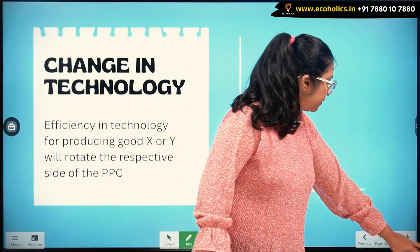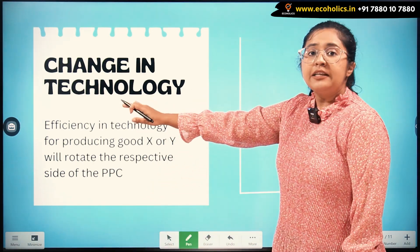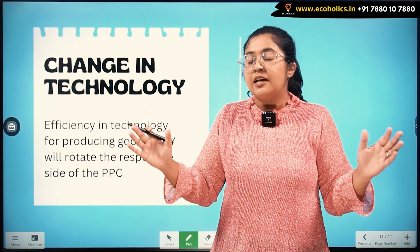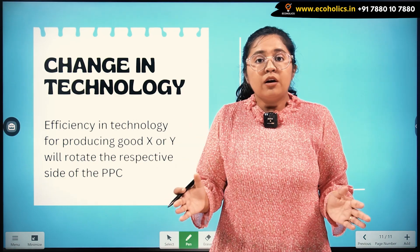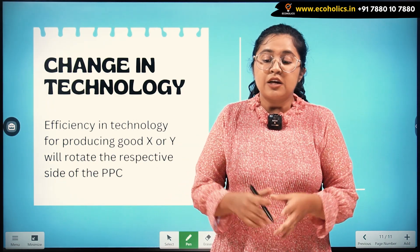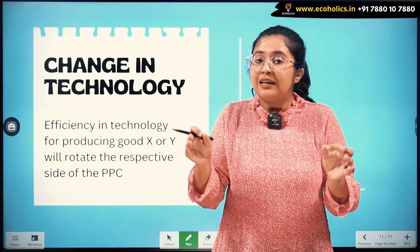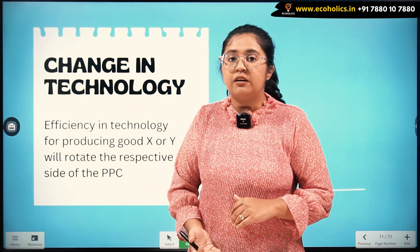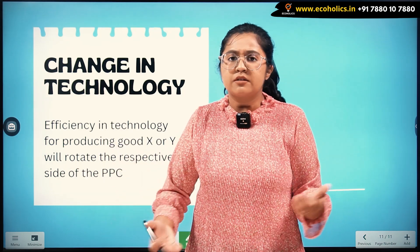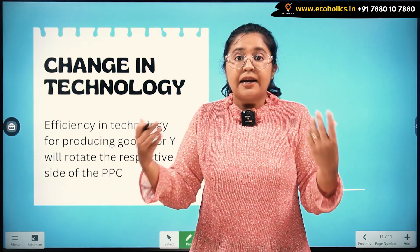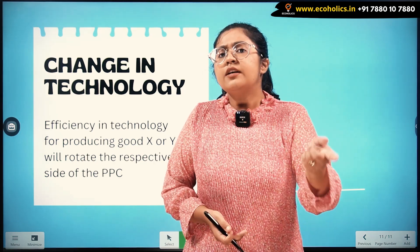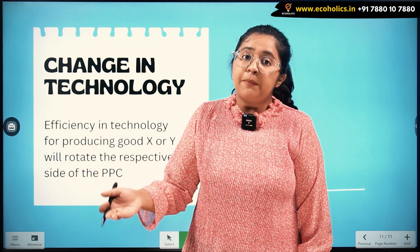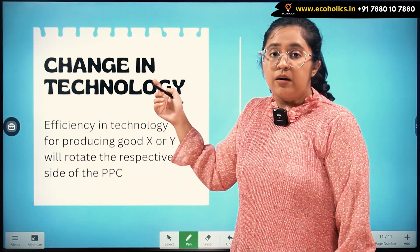So that was the first factor impacting the shifting of PPC. The next factor is change in technology. When we talk about PPC, we always say technology is kept constant at a given point of time. However, when we want to understand what the PPC was last year versus this year, the timeline has changed, so we need to understand the impact of technology over that duration. There can be a positive impact of technology on each commodity's aspect.